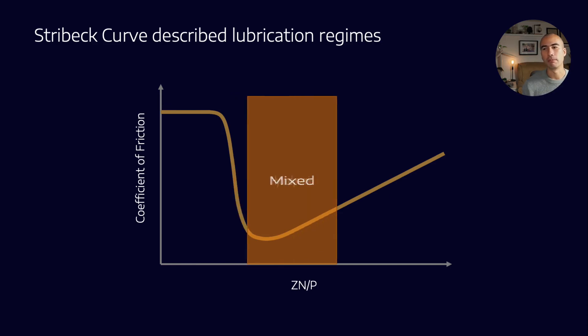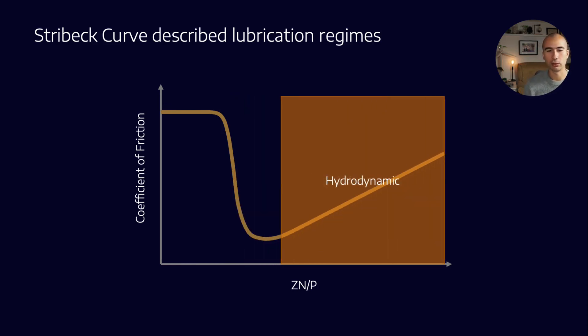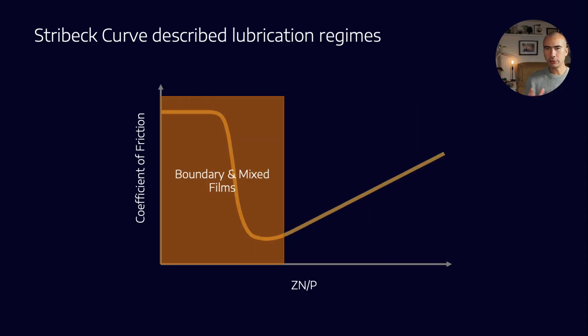It's boundary, we've got mixed, and the hydrodynamic lubrication regime. For non-conforming surfaces, that would be elasto-hydrodynamic. What we're specifically talking about is the boundary and mixed lubrication regimes. And where does that happen is at low values for this ZN/P.